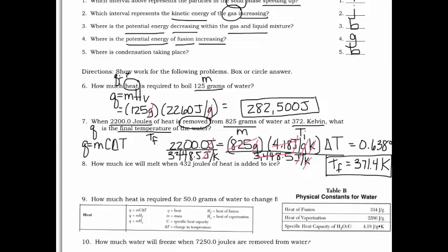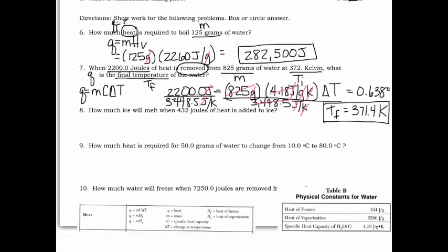That was probably the most complicated question you could be asked. Number eight: how much ice will melt when 432 joules of heat is added? Q is given as 432 joules, and we're looking for M. Since we're talking about a phase change, temperature doesn't change, so we don't use Q = MCΔt. Since we're talking about melting — the freezing point — we use Q = MH_F.